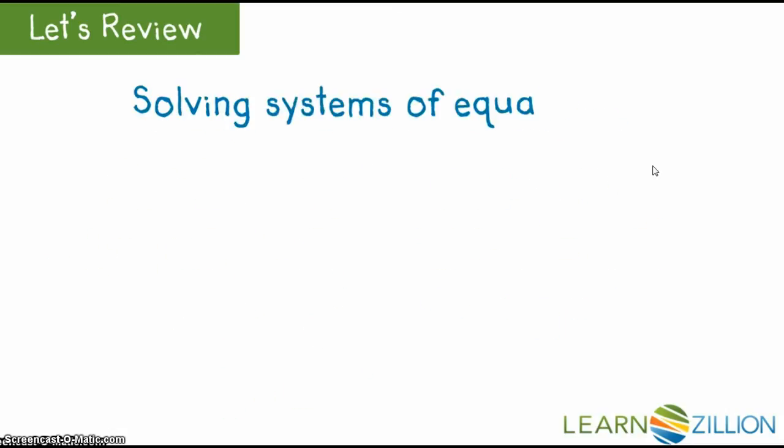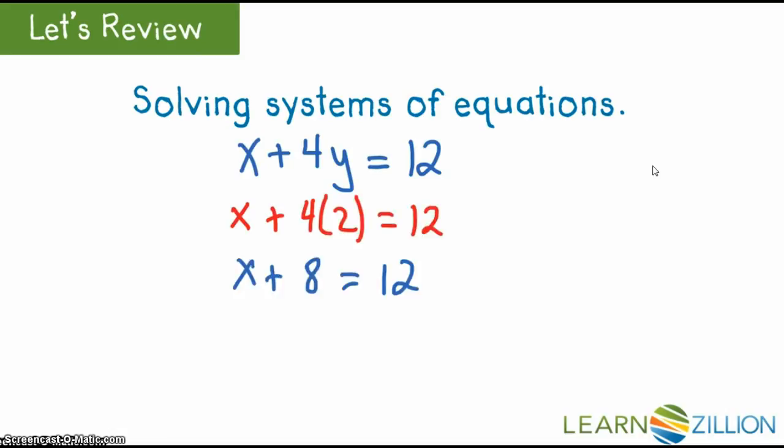Now that we know the value of y, we can substitute it into either equation. Using the second equation, this leads to x plus 8 equals 12. Solving that one-step addition equation gives the value of x as 4. Now we have the unique solution for the pair of equations.